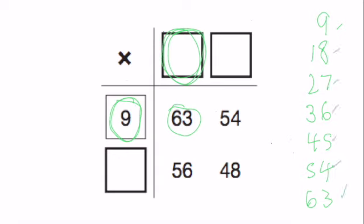So the missing number there is 7. 9 times 7 is 63.